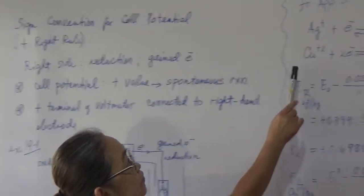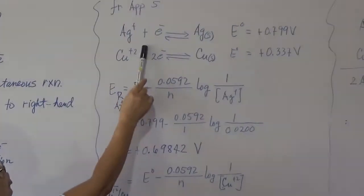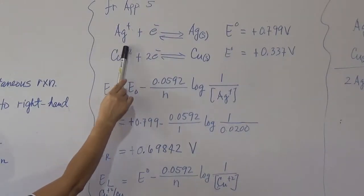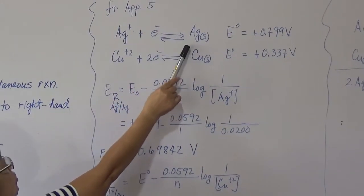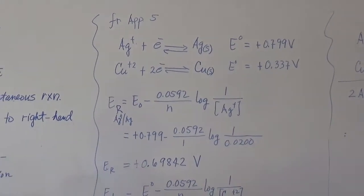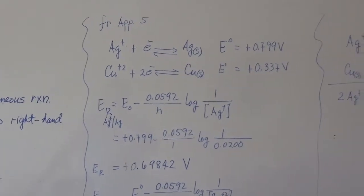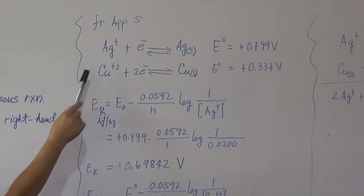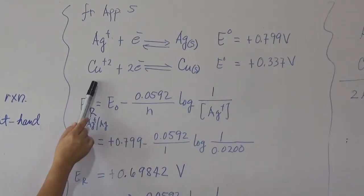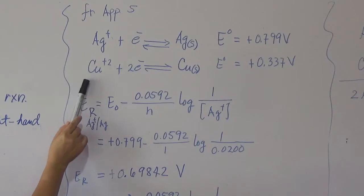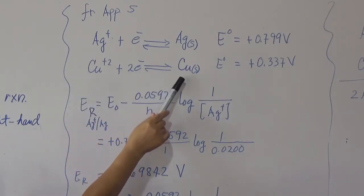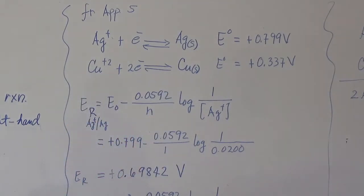For example, if you have this equation, you have silver ion then it is being reduced to silver as solid, so zero charge — that is reduction. Also this one: you have copper plus two, then it is being reduced to copper with a zero charge. So it means reduction potential.